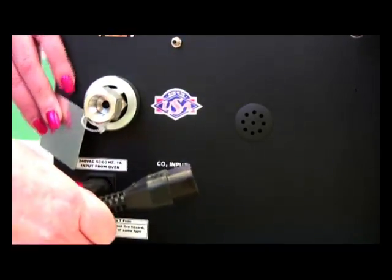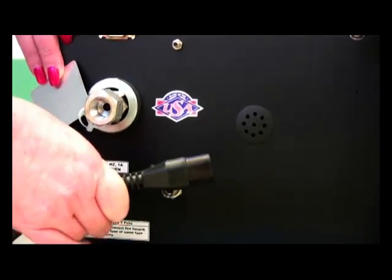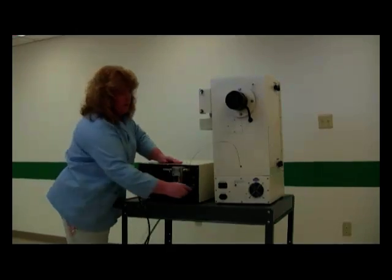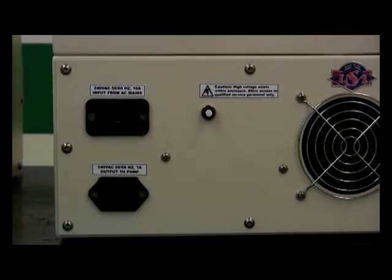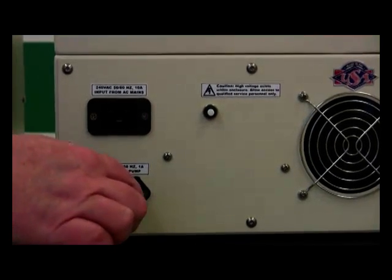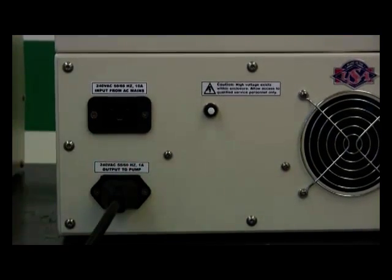Plug the smaller end of the power connection cord into the back of the pump, then plug the larger of the two ends into the back of the oven. This connects the power to the pump from the oven.